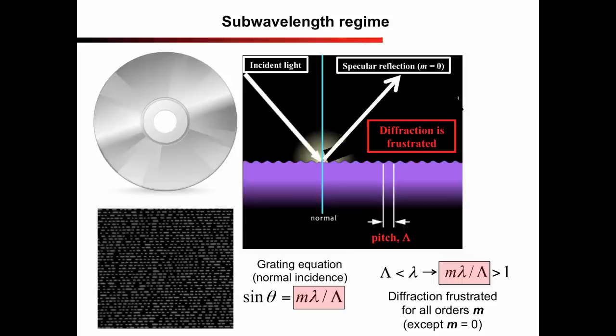Diffraction is frustrated, no color spectrum is observed, and white light upon reflection remains white just like upon reflection from a mirror.